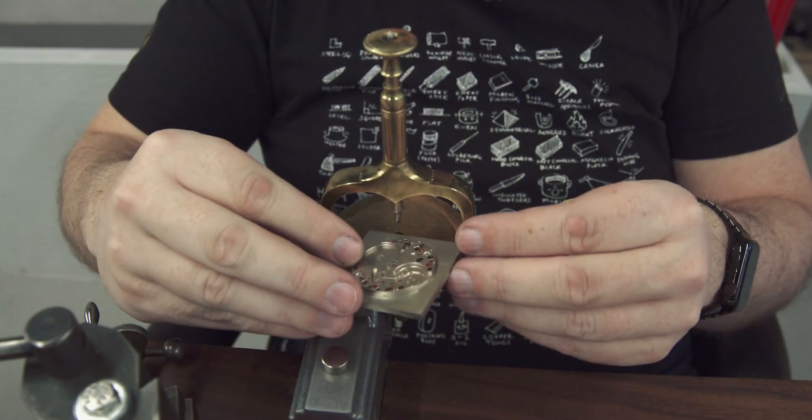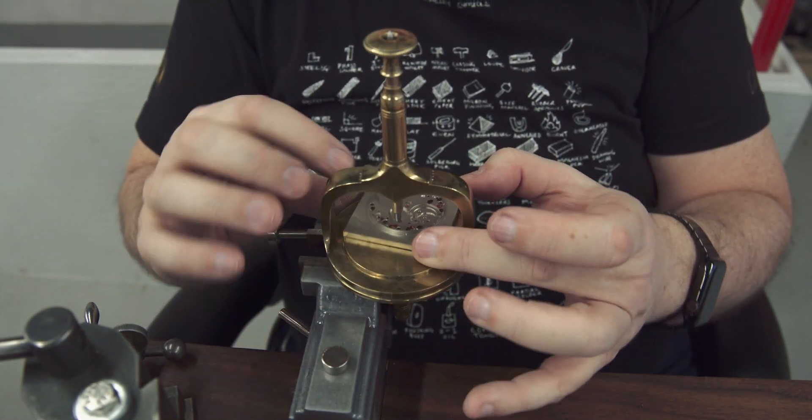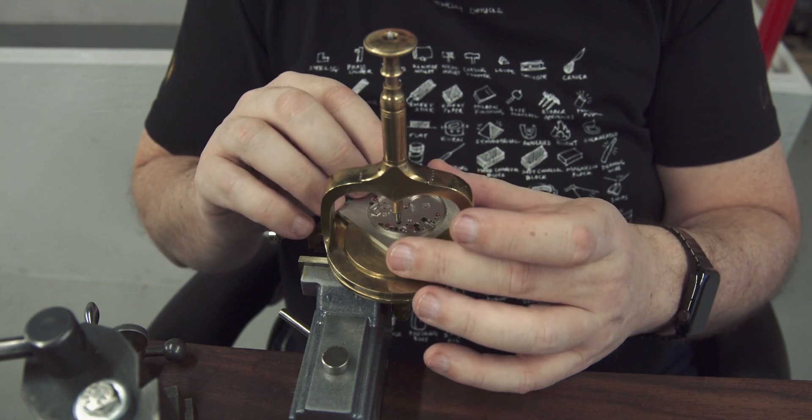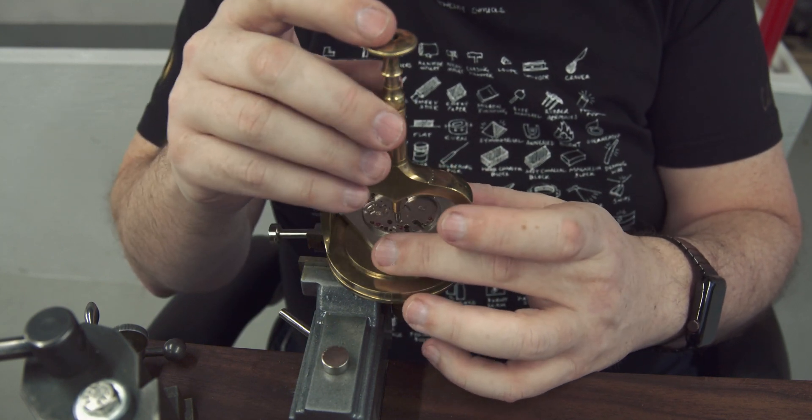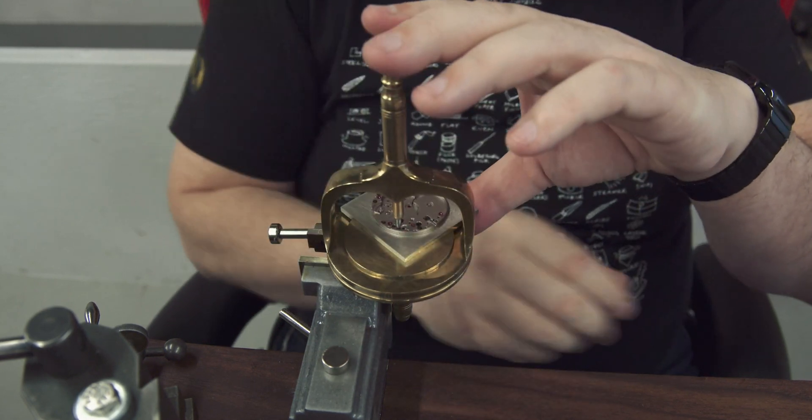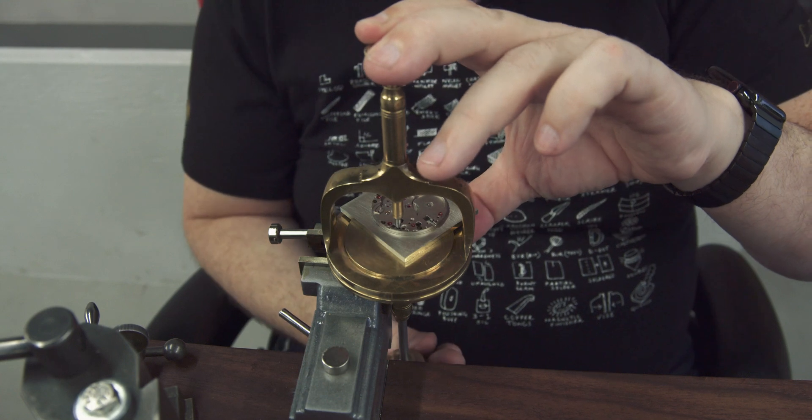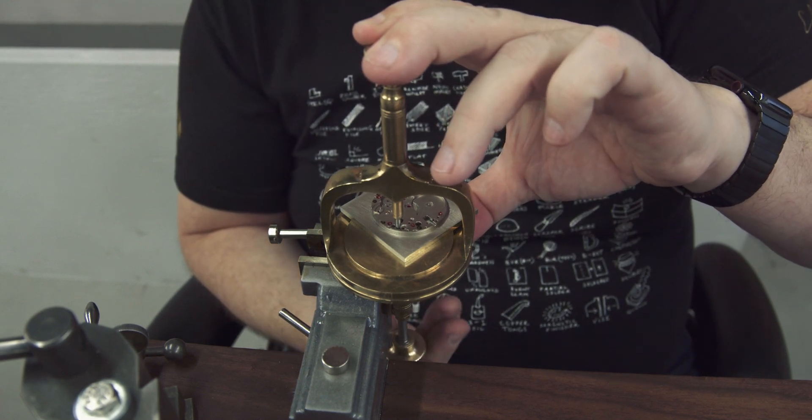The brass tool you see me using here is called an uprighting tool. It's a classic watchmaking tool that doesn't get any use today in modern manufacturing. The pins on the top and bottom are perfectly aligned which allows me to center an existing hole from the main plate and then mark that hole on the bridge plate on the bottom.